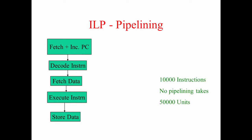If I have 10,000 instructions to execute and each unit takes one unit of time, then one instruction takes five units of time, so 10,000 instructions takes 50,000 units. When an instruction is being fetched, the other four units are idle. When it is being decoded, the remaining four units are idle. So at any point in time, only one-fifth of the hardware is working and the remaining four-fifths is idle. Can I do something about it? That is where the notion of pipelining comes in.